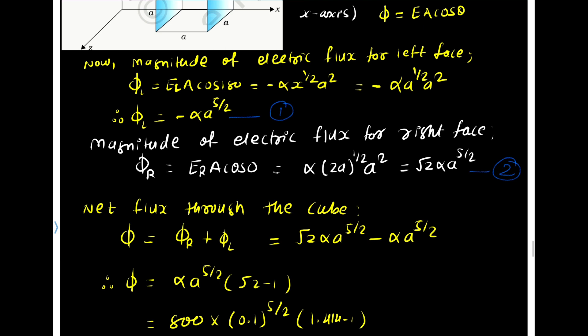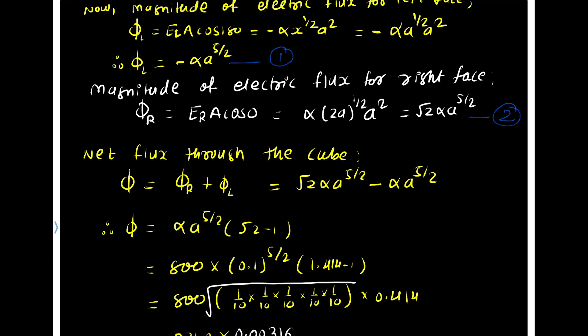The net flux through the cube is φr + φl. φr is √2 α a^(5/2), and flux to the left face is -α a^(5/2). Taking α a^(5/2) common, we get α a^(5/2) times (√2 - 1).